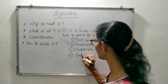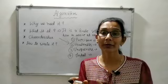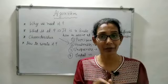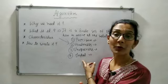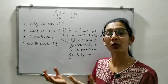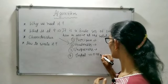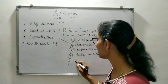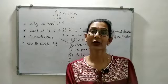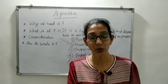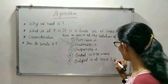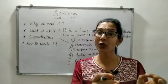The fourth characteristic is input. Input means zero or more inputs should be supplied to the algorithm. For example, if you have to print a simple statement, we may have no input. But if you have to print values or perform calculations, then we can supply one or more inputs. The fifth and last characteristic is output. When you write an algorithm or program, it is compulsory that you get some output — at least one output must be generated, though more than one is also fine.